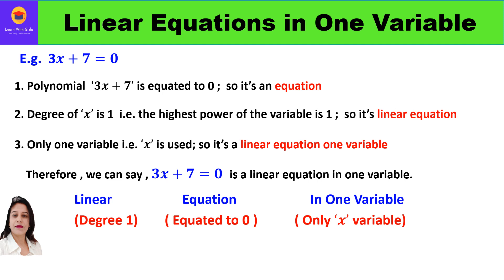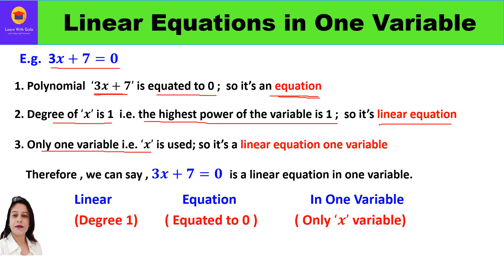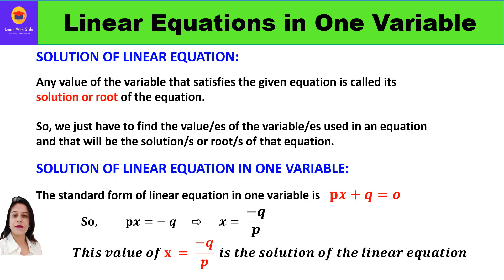Let me revise with an example: 3x plus 7 equal to 0. Here 3x plus 7 is a polynomial equated to 0, forming an equation. The degree of x is 1 — the highest power of the variable is 1 — so it is a linear equation. Since only one variable x is used, it is a linear equation in one variable. It is linear because degree is 1, an equation because equated to 0, and in one variable because only x is used.